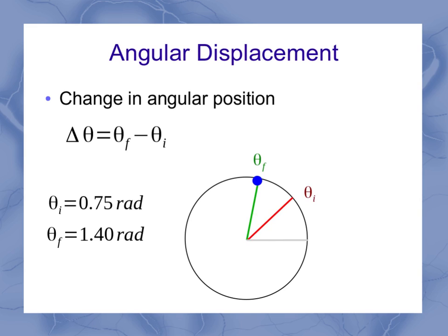Now, our delta theta looks at where it started to where it went, and so that change is our delta theta. Mathematically, it's just the subtraction of these, giving us 0.65 radians: 1.4 minus 0.75.